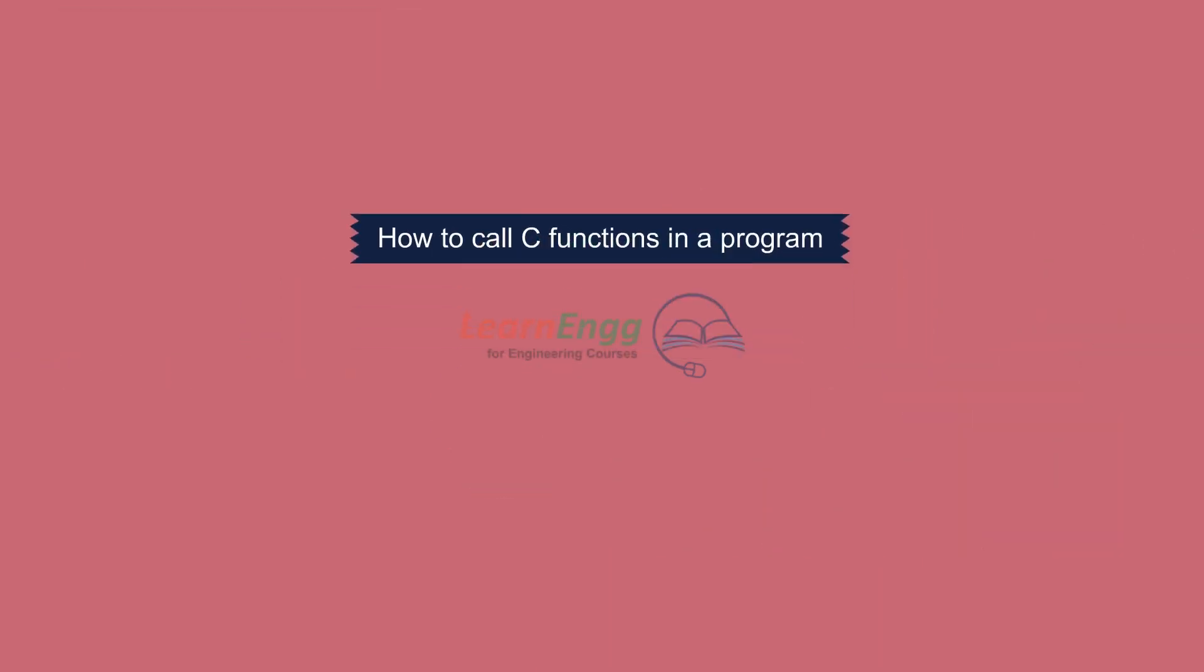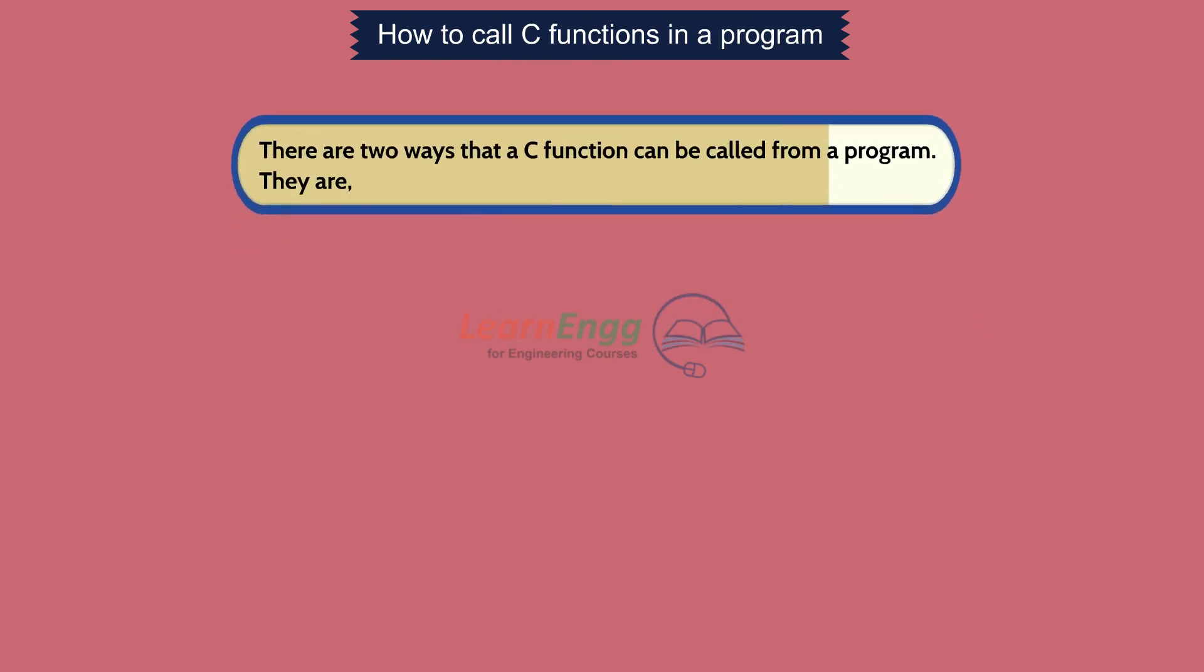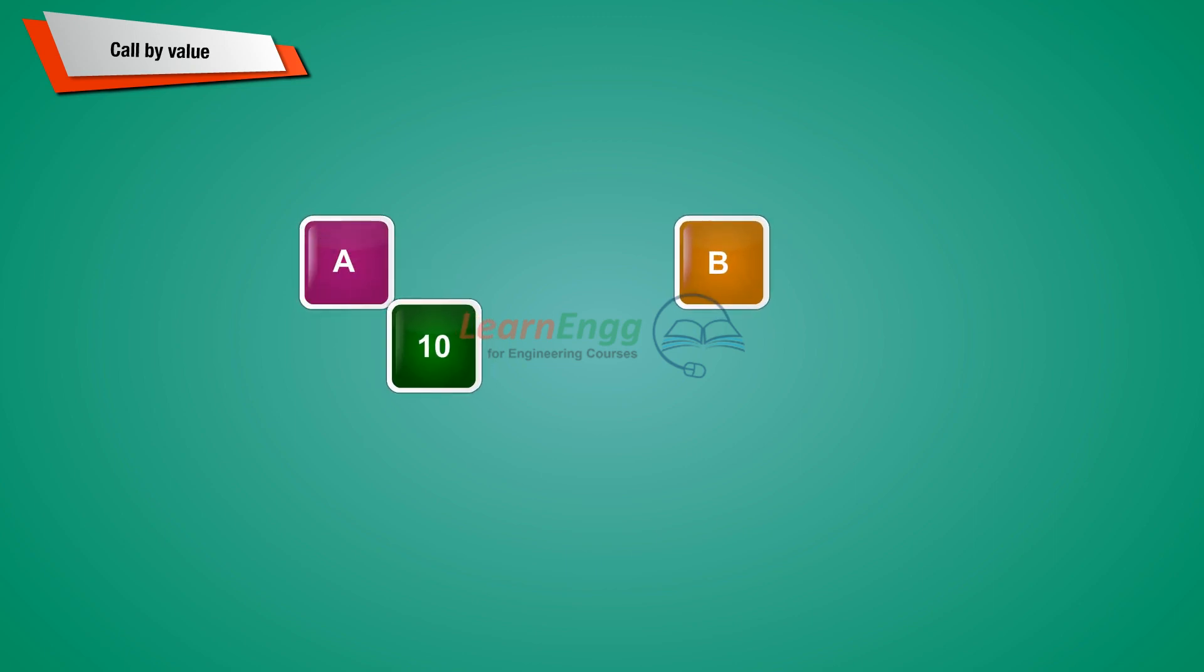How to call C functions in a program? There are two ways that a C function can be called from a program. They are: The call by value is a method of passing arguments to a function that copies the actual value of an argument into the formal parameter of the function. In this case, changes made to the parameter inside the function have no effect on the argument.